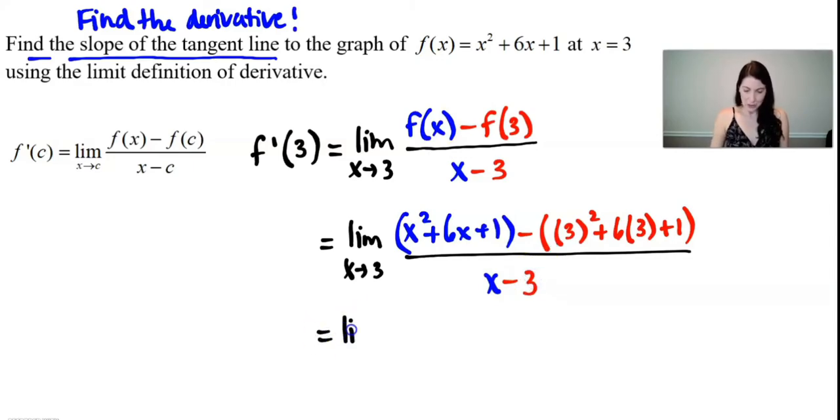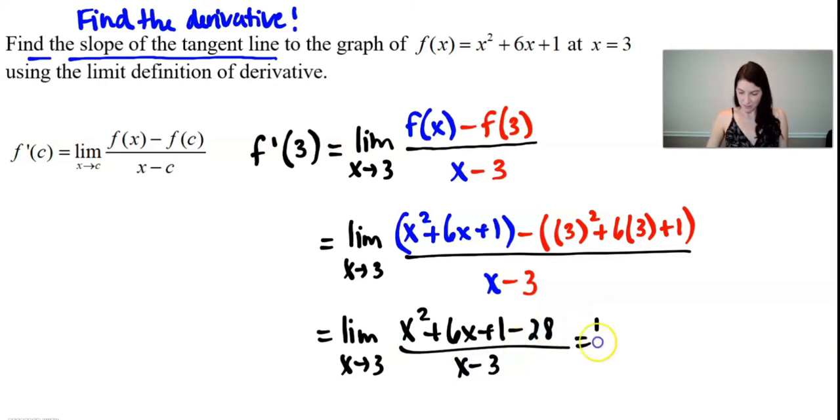All right everyone, let's do some simplifying. The limit as x approaches 3 of x² + 6x + 1 minus, let's see, that'd be 9 plus 18, 27 plus 1. All right, 28 all over x - 3. Let's go ahead and simplify the numerator. We have the limit as x approaches 3 of x² + 6x - 27.